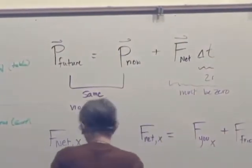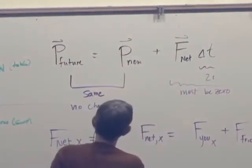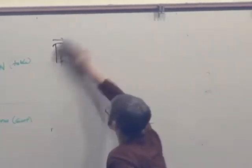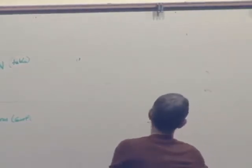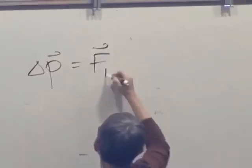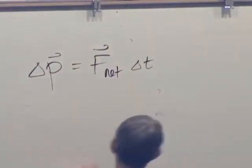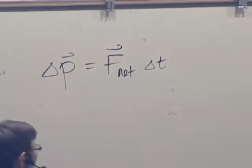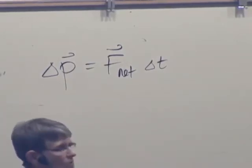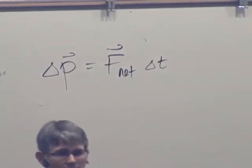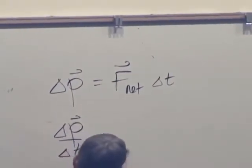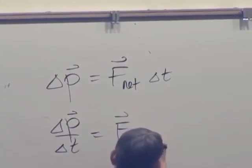Another way of thinking about this, we can write the equation a different way. We can say, we can use the delta P is F net delta T form. And we can say, well we can divide through both sides by delta T which is a scalar. It's just some time. So we can say, delta P over delta T is F net.